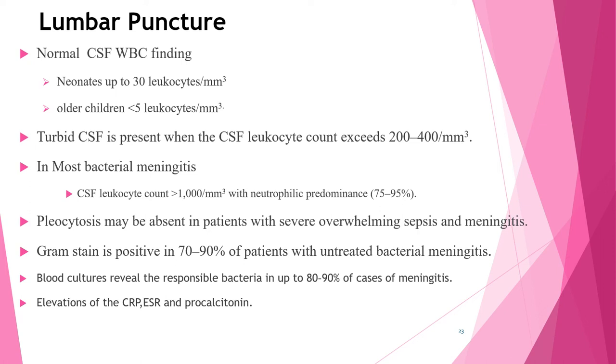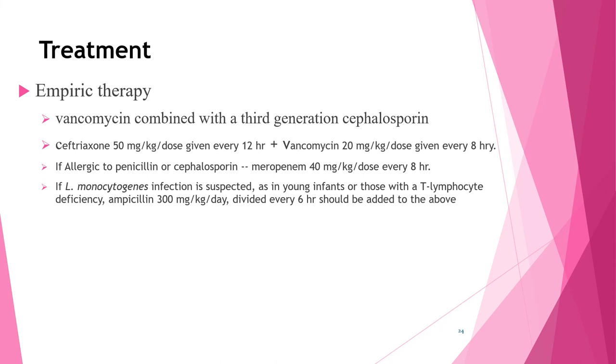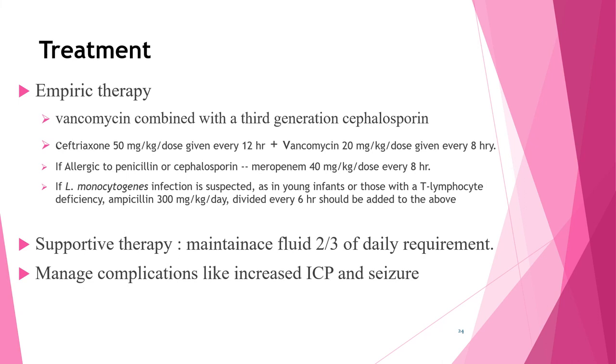Regarding treatment: prompt recognition, diagnostic testing, and initiation of appropriate antimicrobial therapy are essential. First-line empirical antibiotic therapy is vancomycin combined with a third-generation cephalosporin such as ceftriaxone or cefotaxime. If the patient is allergic to penicillin or cephalosporins, meropenem can be used. If Listeria monocytogenes is suspected — for example in younger infants or those with T-cell deficiency — ampicillin is added to ceftriaxone and vancomycin.